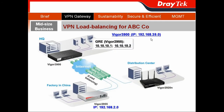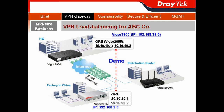We use ABC Company's story again. Their headquarters and the factory in China want to have VPN load-balancing. Please note: in order to have VPN load-balancing, the remote-side device also needs to support the VPN load-balancing function. So we choose the VIGCET 2955, and use different GRE numbers to distinguish two VPN load-balancing profiles for the headquarters and the factory in China.